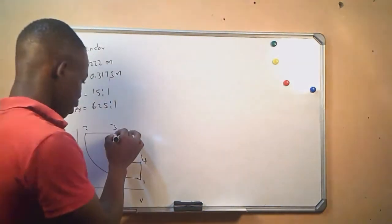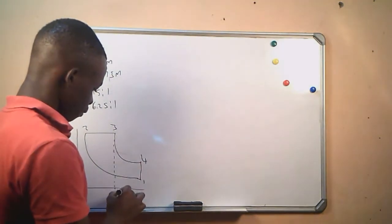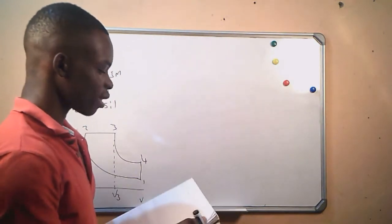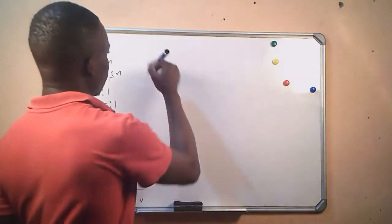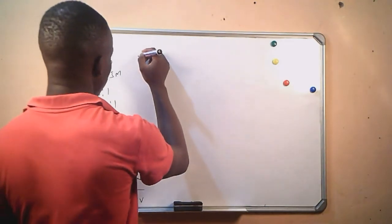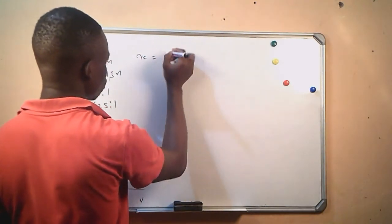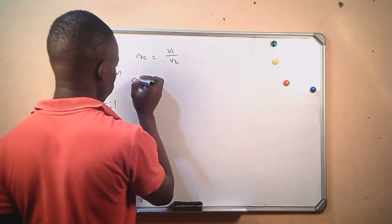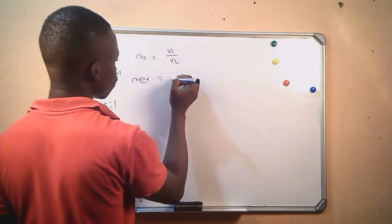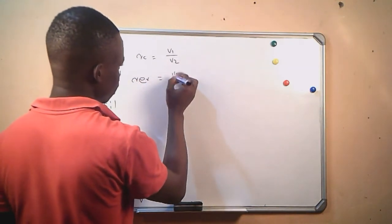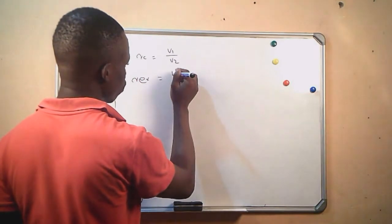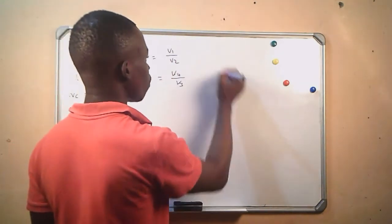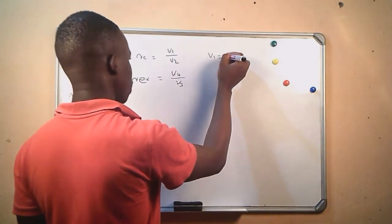We are asked to calculate V3, which is this one. Now, what we need to know is that the compression ratio equals V1 divided by V2, and the expansion ratio equals V4 divided by V3. We also know that V1 equals V4.